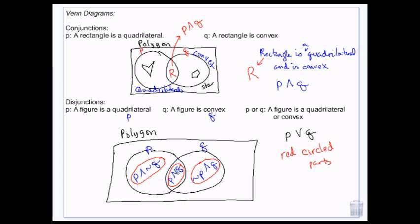P or Q could be any one of these three zones. P and Q is only the center. So if you're just a quadrilateral you're over here, if you're just convex and not a quadrilateral you're over here, if you're both you're in the middle. And if you're P or Q — so you're a quadrilateral or convex — you could be anywhere in those circles.